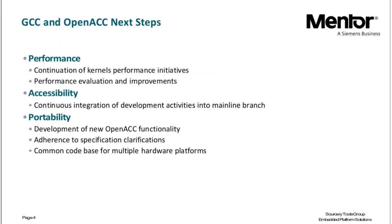Our ongoing work is still focused on performance improvements—looking into actual code that our customers are interested in accelerating and seeing what the compiler can do to help. The goal is also to integrate existing work from the development branch into the mainline branch, and to add support for newer OpenACC features still missing from GCC, as well as fixing bugs. When implementing a compiler according to a specification, you notice corner cases needing clarification, so we work with the OpenACC committee to clarify those and then fix the compiler.